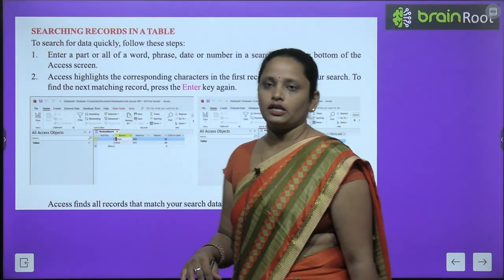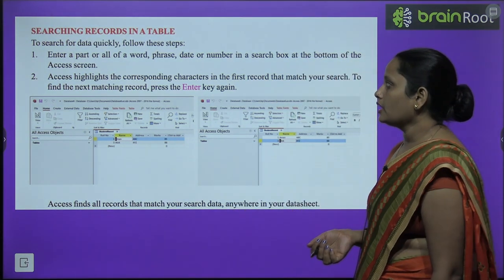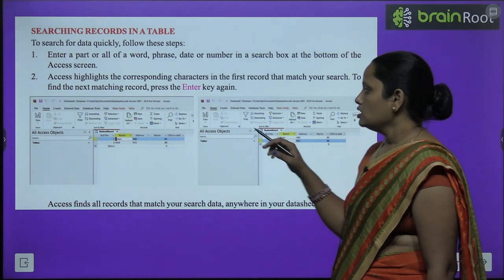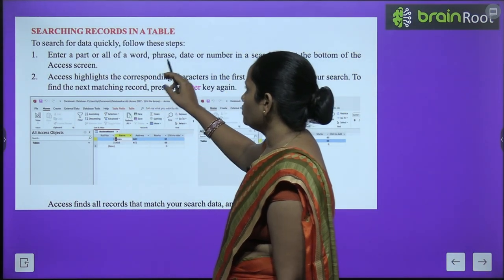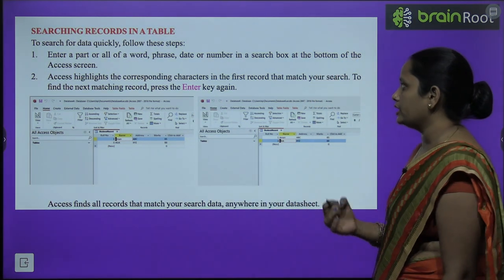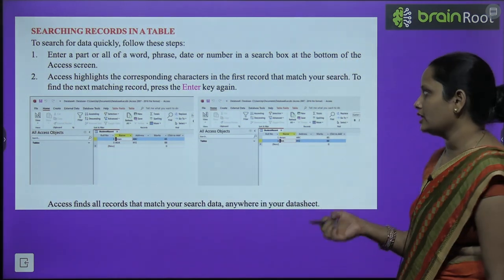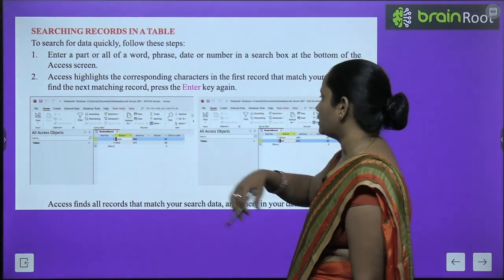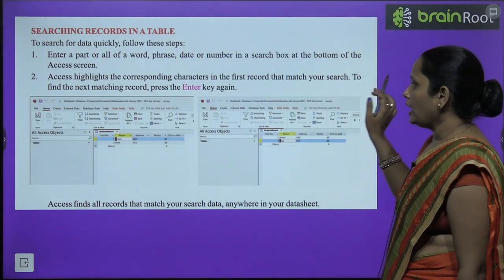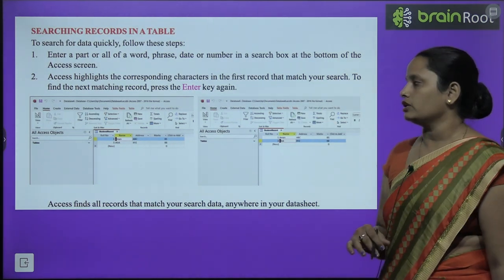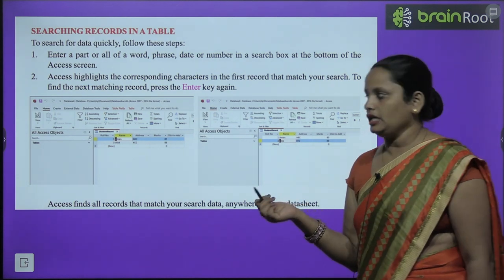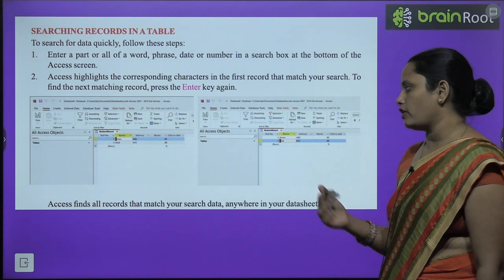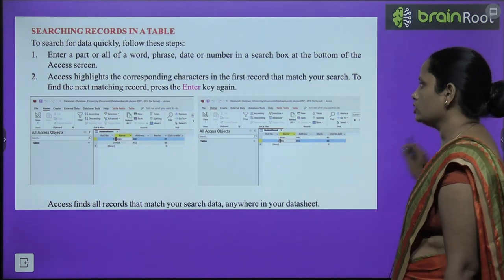Next, searching records in a table. Enter a word, phrase, data, or number in the search box. Access will highlight the corresponding matching characters. Press Enter again and Access finds all records that match your search anywhere in your datasheet.